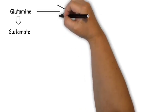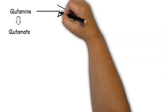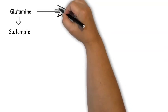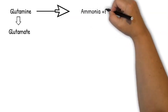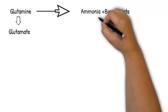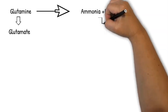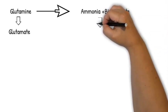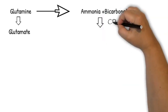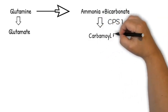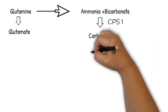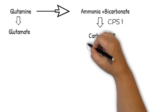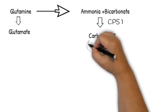In the presence of the enzyme CPS1, or carbamoyl phosphate synthetase 1, this results in the formation of carbamoyl phosphate, which is a very important intermediate. This will play a role in the next step which involves the conversion of ornithine to another intermediate.